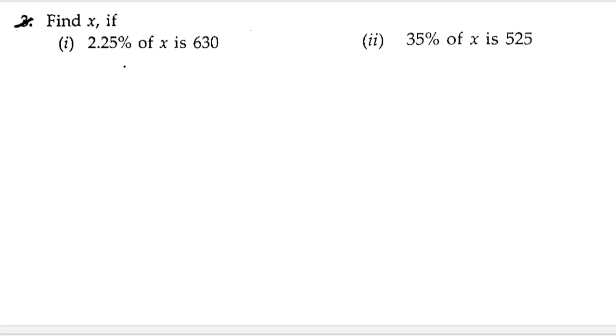So let us solve the first bit. In this they have given 2.25% of x and that is 630. So let us start the solution. We can write the given 2.25% of x equals 630.